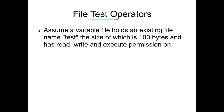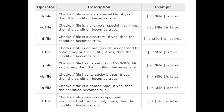Next are file test operators. These operators operate on files. Suppose a variable 'file' holds an existing file name of size 100 bytes with read, write, and execute permissions. To find out things about a file — whether it exists, its size, or whether it has read, write, or execute permission — we use file test operators. There are various file test operators; we will cover the important ones.